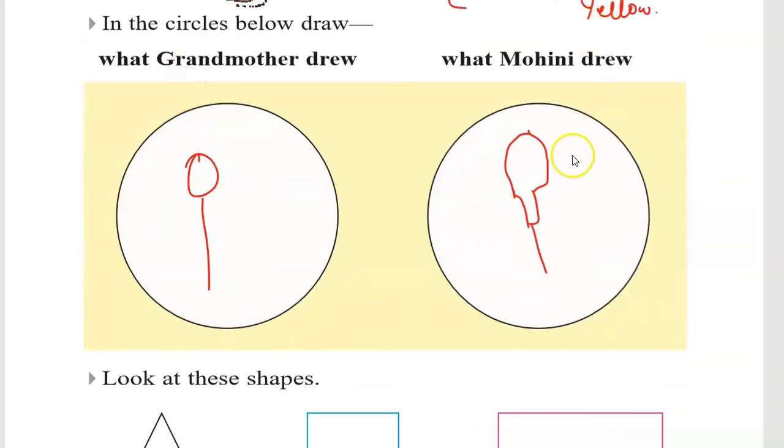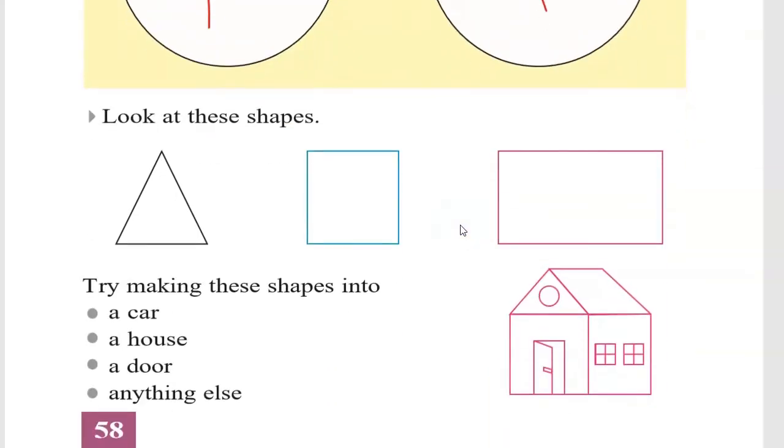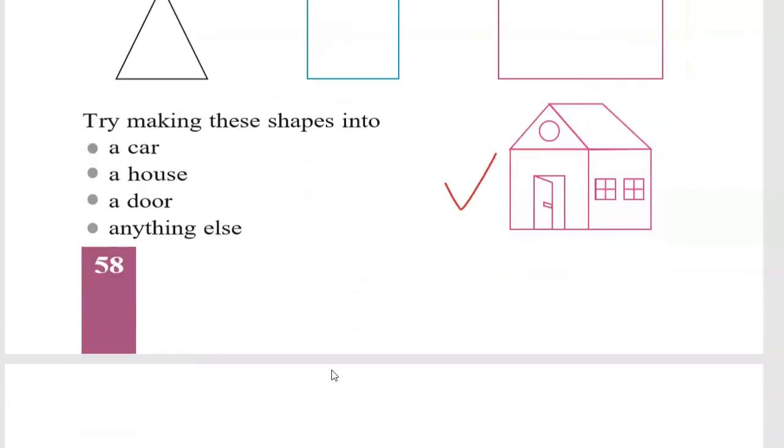Grandmother drew a balloon and Mohini also drew a balloon. Now look at these shapes: triangle, square, rectangle. Try making these shapes into a car, a house, a door, anything else. You can draw any shape like this. You can share in the comments.